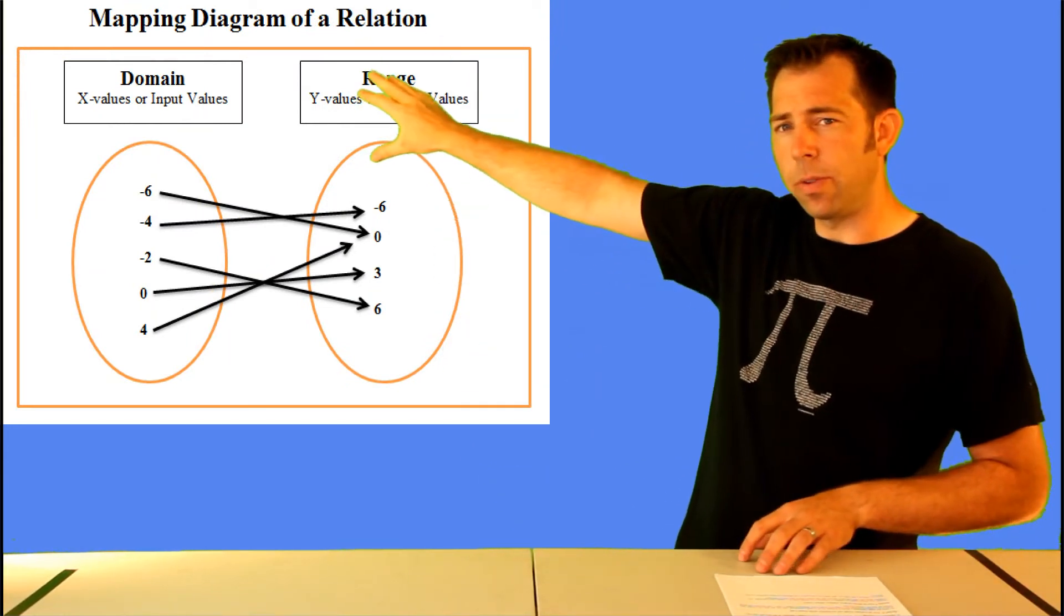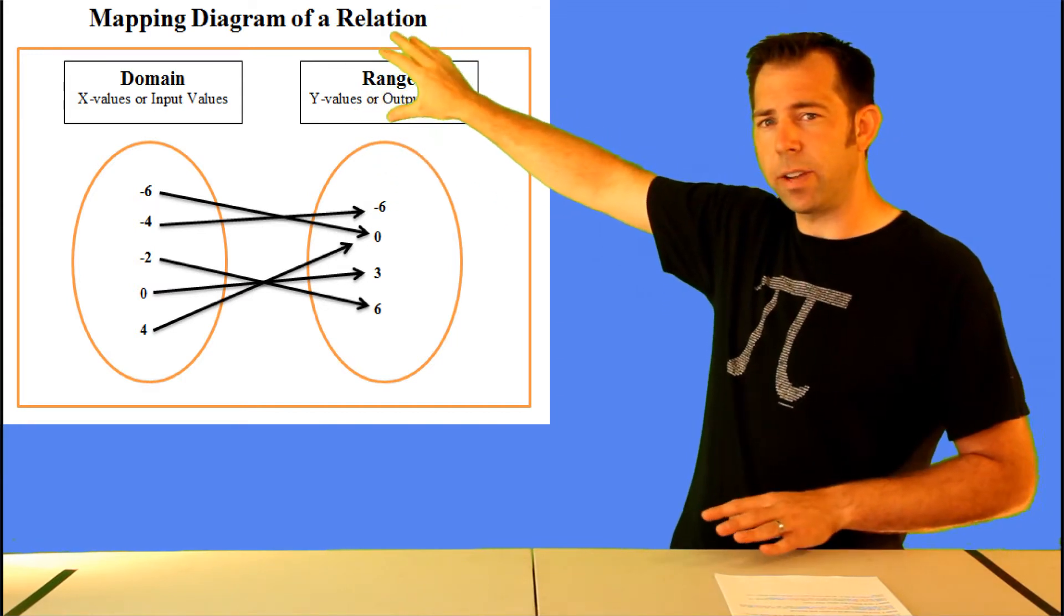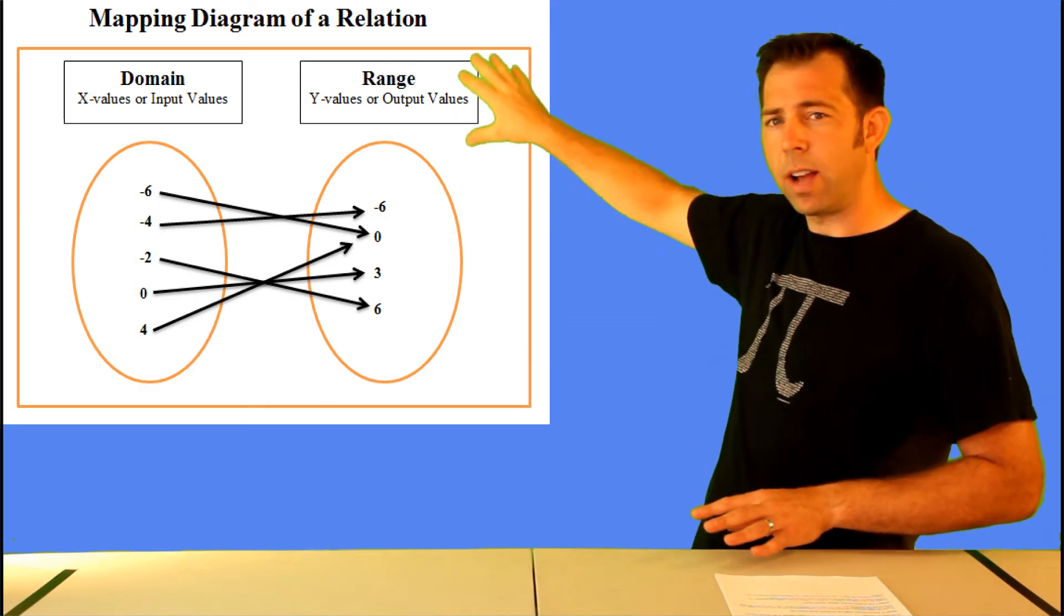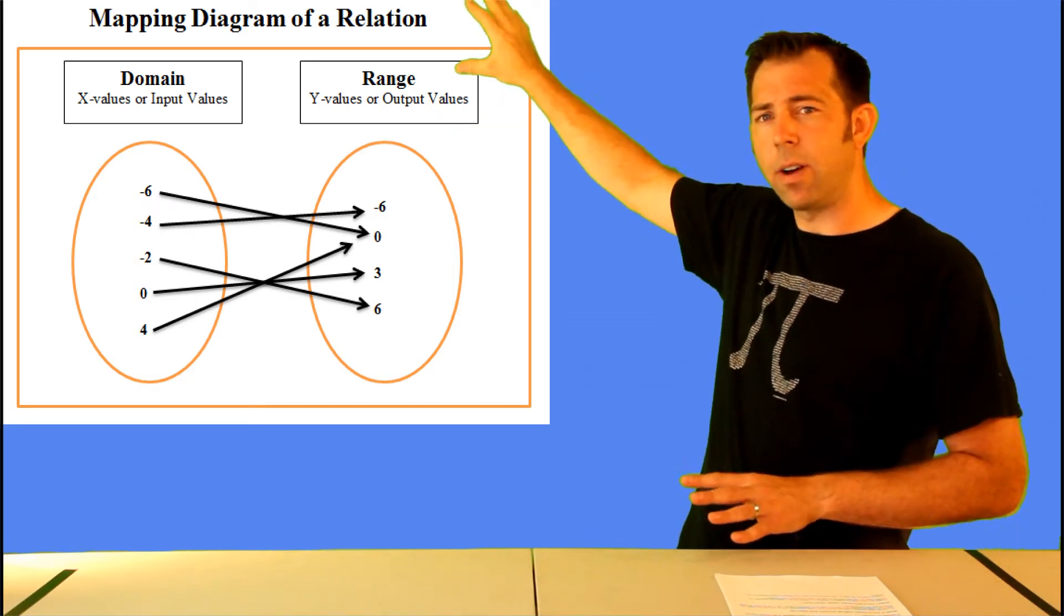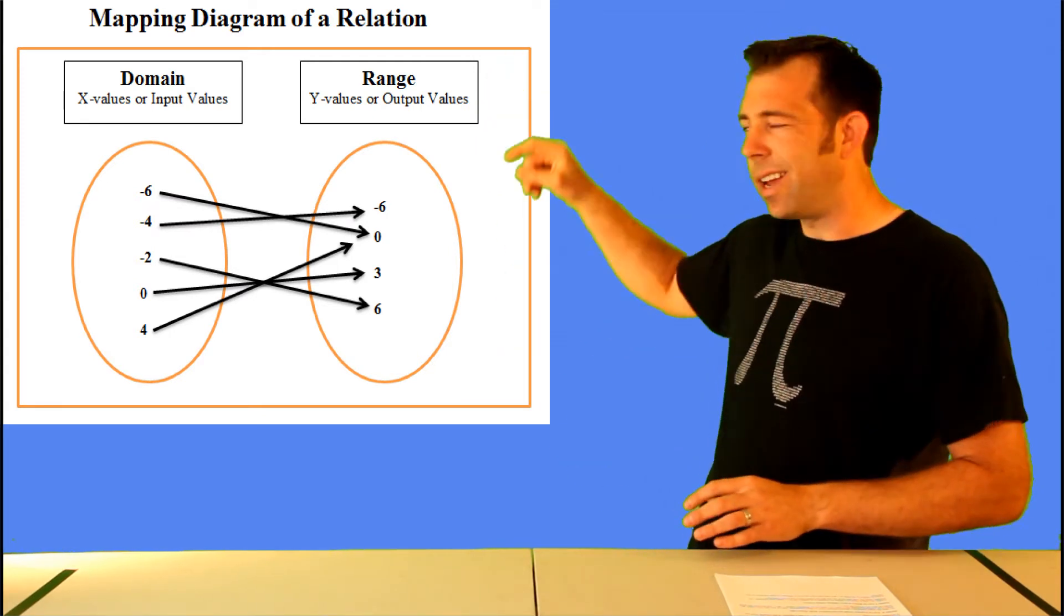Now here's that same relation represented as a mapping diagram. Over here on the left, we've got all the x-values of the ordered pairs, and we call the set of all x-values the domain. On the right, we've got all the y-values of the ordered pairs, and we call the set of all the y-values of the ordered pairs the range.